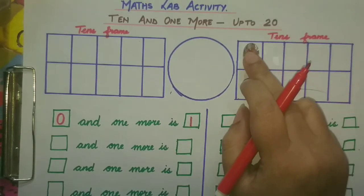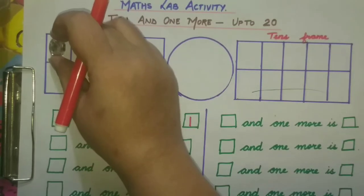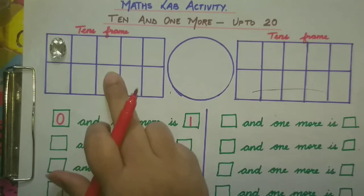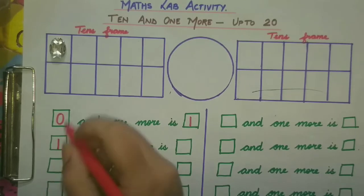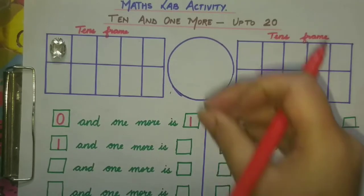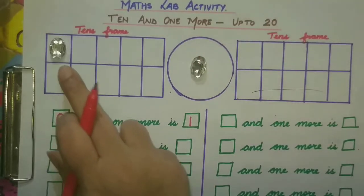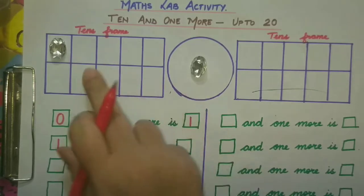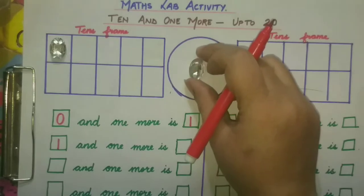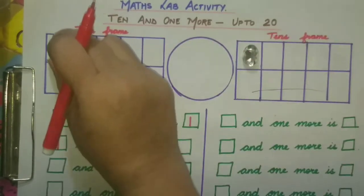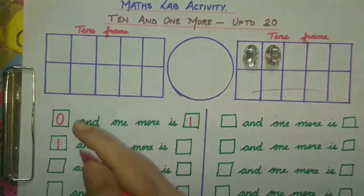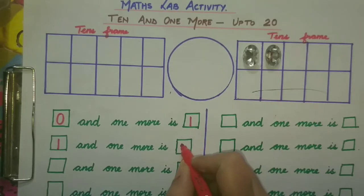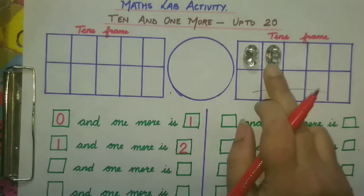Now we will bring this 1 back to the first ten frame. How many do we have in the first place? 1. So we will write 1 here. 1 and 1 more — to find out, we will bring them to the next ten frame and put them together. So 1 and 1 more is 2.